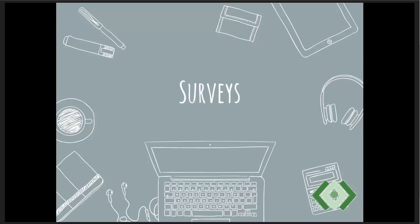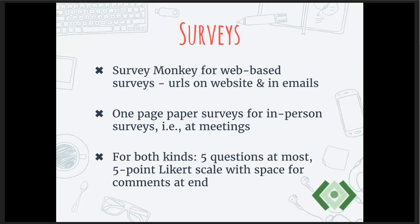We use SurveyMonkey quite a bit because it's simple and easy and people can do it at their convenience. We put URLs on the website and in emails. We've been surprised at the good responses we get. We do them very short and sweet — one page, either on paper or on SurveyMonkey. Make them short and sweet with a Likert scale, and always have room for people to write their comments. They'll say one thing on a Likert scale and then tell you more in the comments. Five points is really the best number for the scale — don't do seven, don't do three.